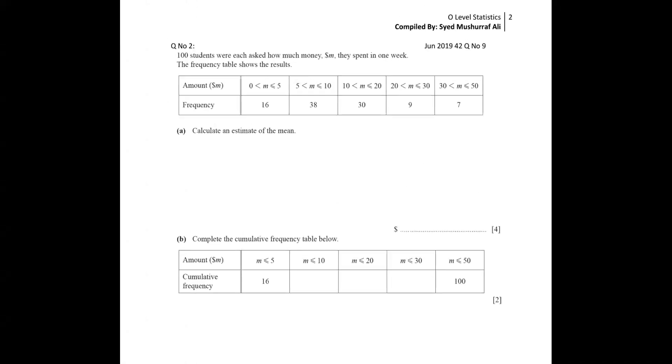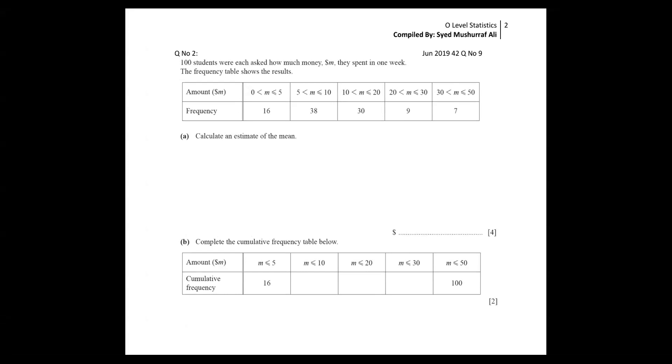So this is the question I have. Look here — Banan and others, please listen up. This is called a cumulative frequency table. How do we make it?